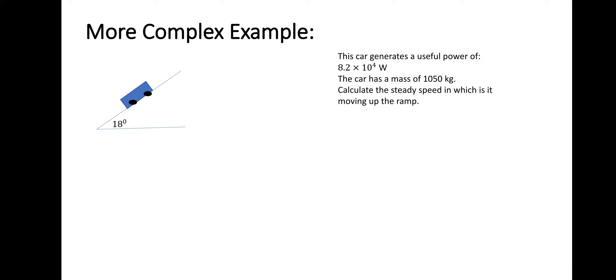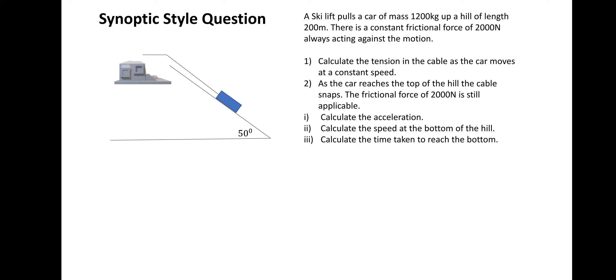Let's move on. A bit of a tricky question this. If you want to have a go at it, please do, just pause the video, and then I'll show you how to work through this. A ski lift pulls a car of mass 1200 kilograms up a hill of length 200 meters. There's a constant frictional force of 2,000 Newtons always acting against the motion. The first thing we want to do is calculate the tension in the cable as the car moves at a constant speed.